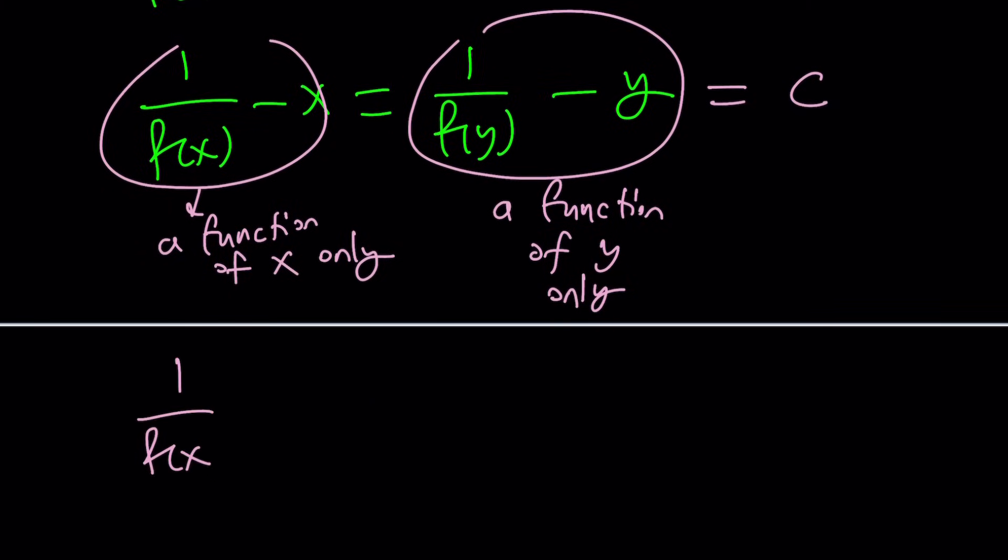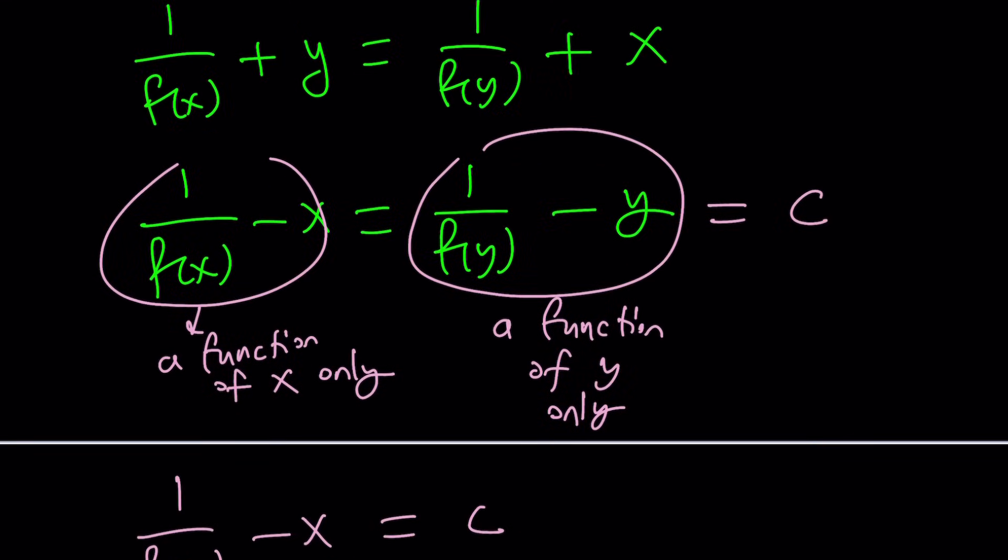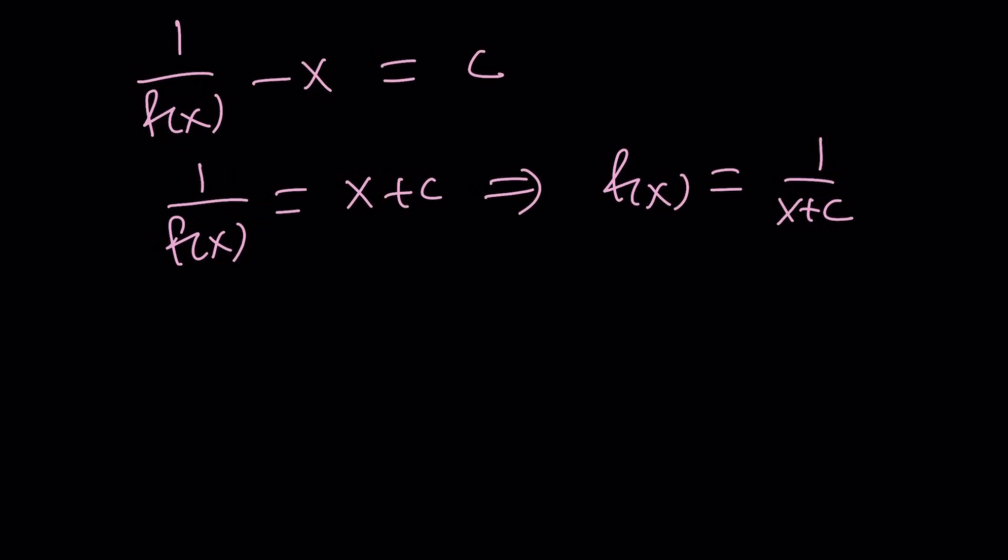From here, we get the following. Let's do the first one, f of x. Okay. Set is equal to c. And from here, you can write 1 over f of x as x plus c. And this implies f of x equals 1 over x plus c. If you do the same thing with y, you're going to realize you get the exact same thing. So you don't really need to do it. We don't have to reinvent the wheel because we already have it. So this is going to be our function.